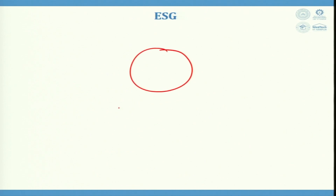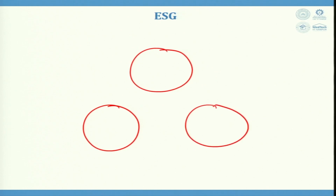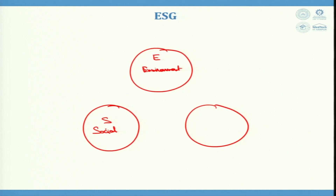ESG has three elements. E stands for Environment, which means the impacts of business operations on environmental stewardship. S stands for Social — how the company manages its relationships with and creates value for stakeholders. Stakeholders could be employees, clients, vendors, or partners. That is the social impact or social value being created.